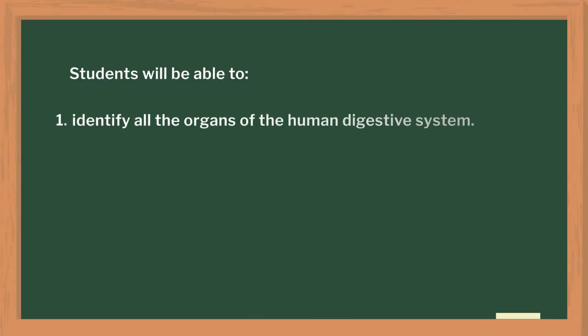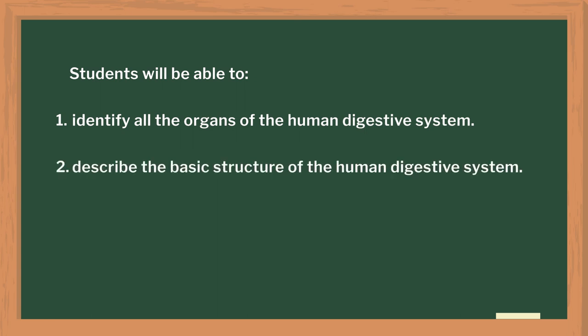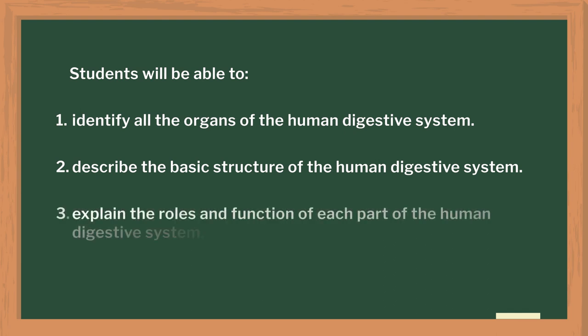The main learning objectives of this activity-based lesson were: the students would be able to identify all the organs of the human digestive system, describe the basic structure of the digestive system, and explain the roles and functions of each part of the digestive system.